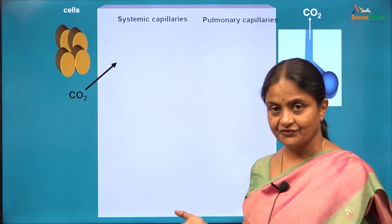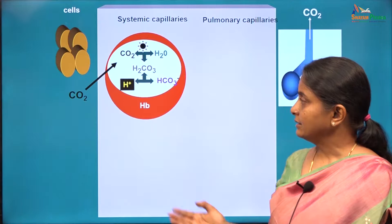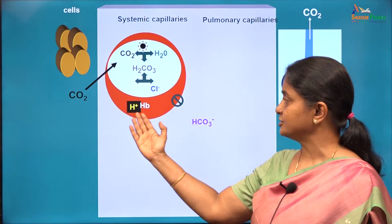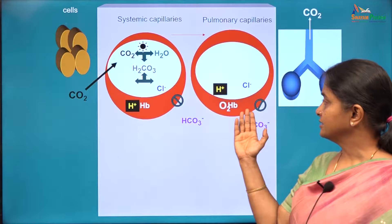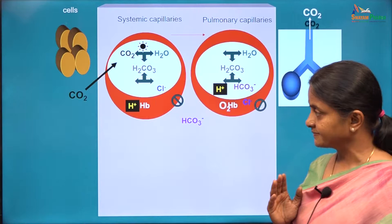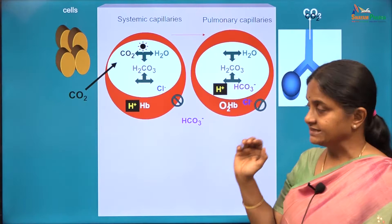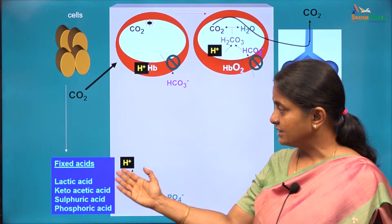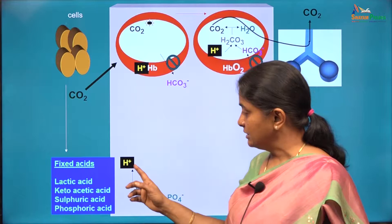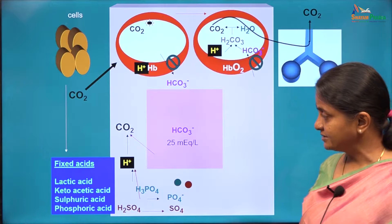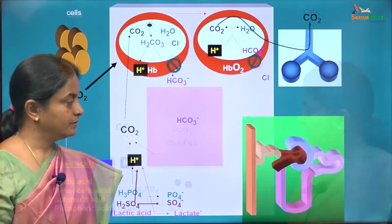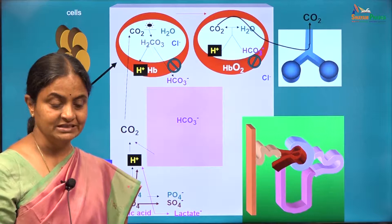We will consider these three mechanisms in this session starting with reabsorption of filtered bicarbonate. Carbon dioxide is handled by red blood cells and the acidity of carbon dioxide is managed by hemoglobin till the carbon dioxide is reformed within the red blood cells and eliminated in the lungs. Carbon dioxide is therefore called a volatile acid. This session is about the role of the kidney in maintaining plasma bicarbonate levels.